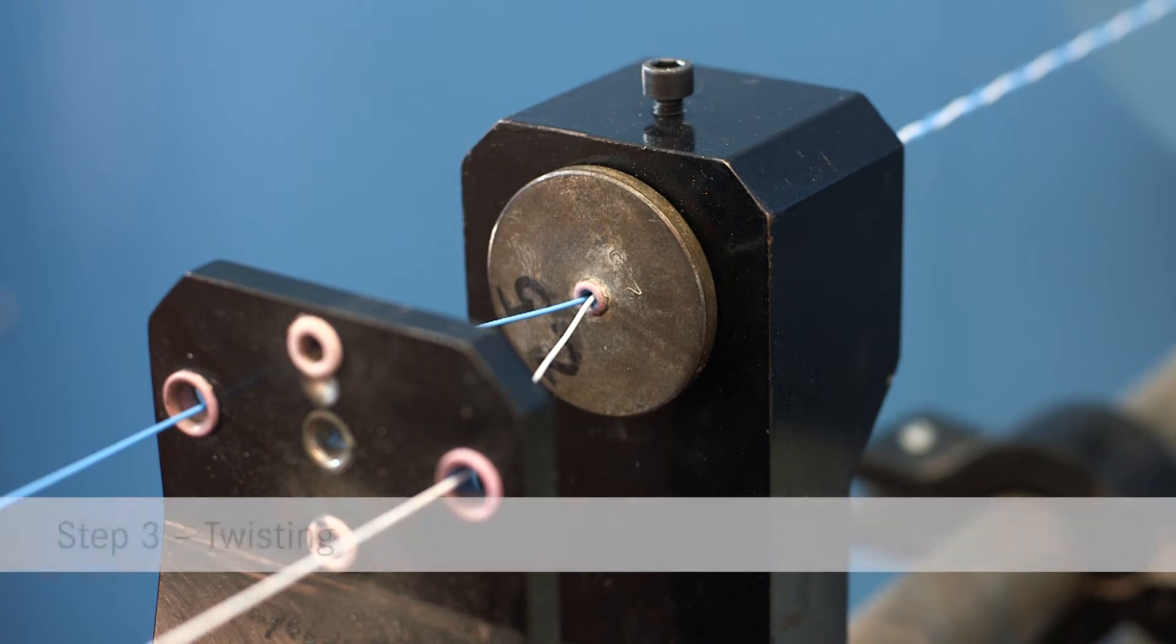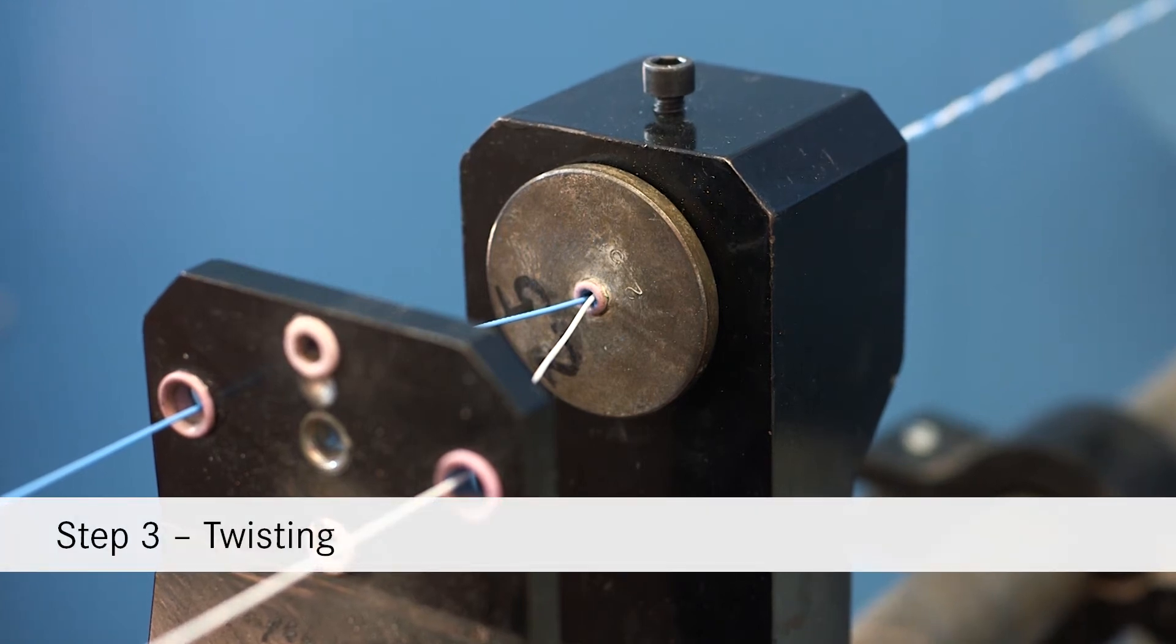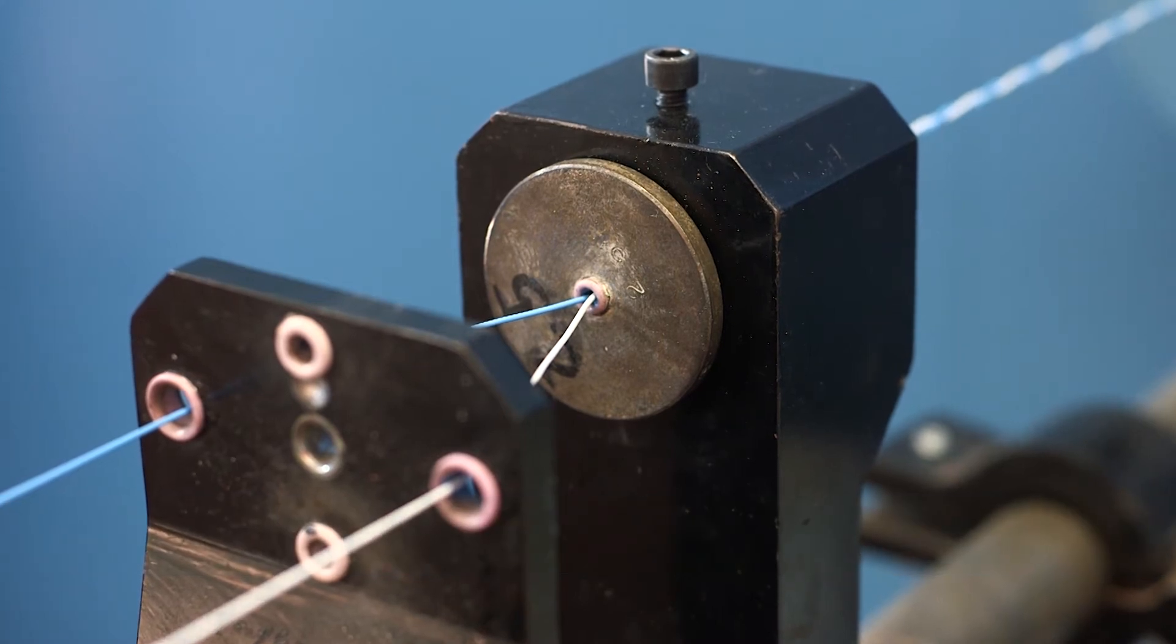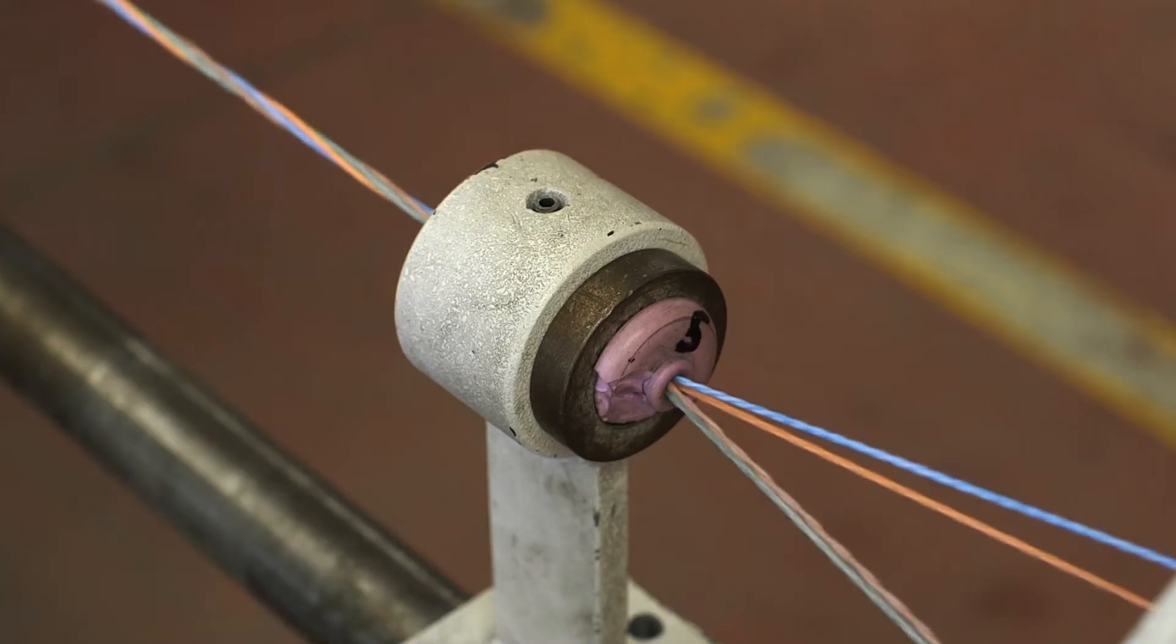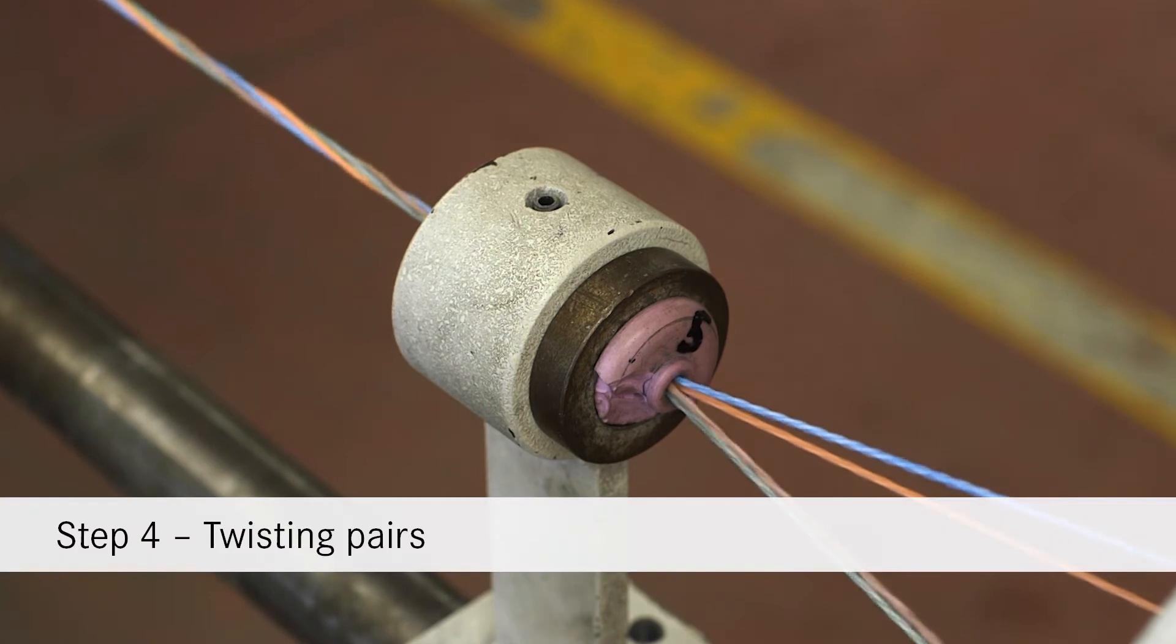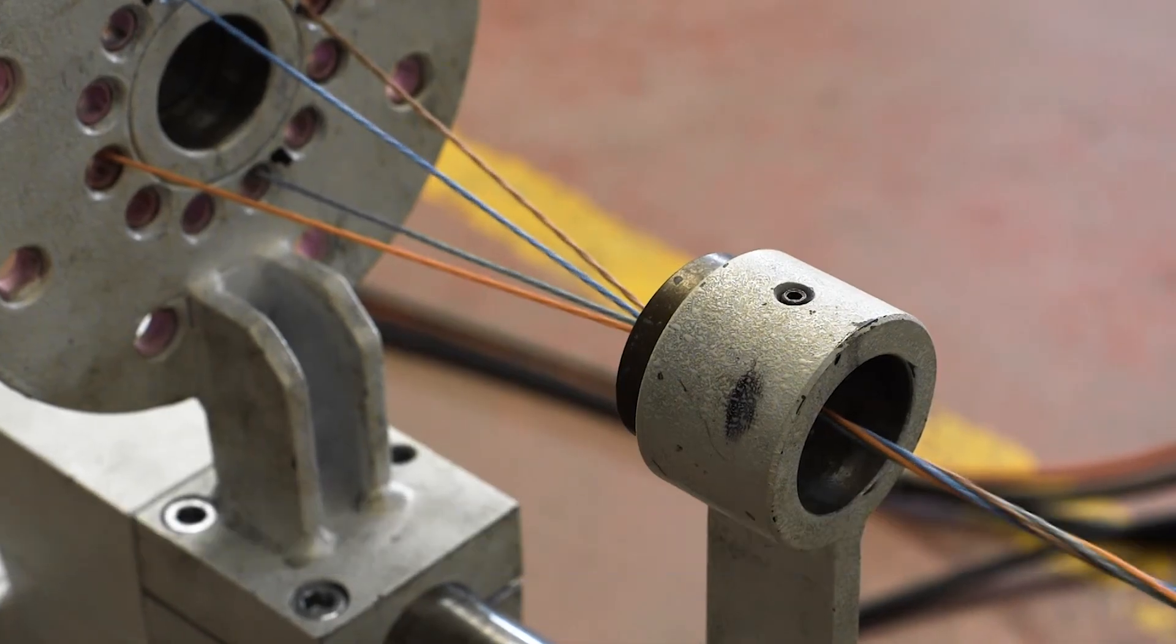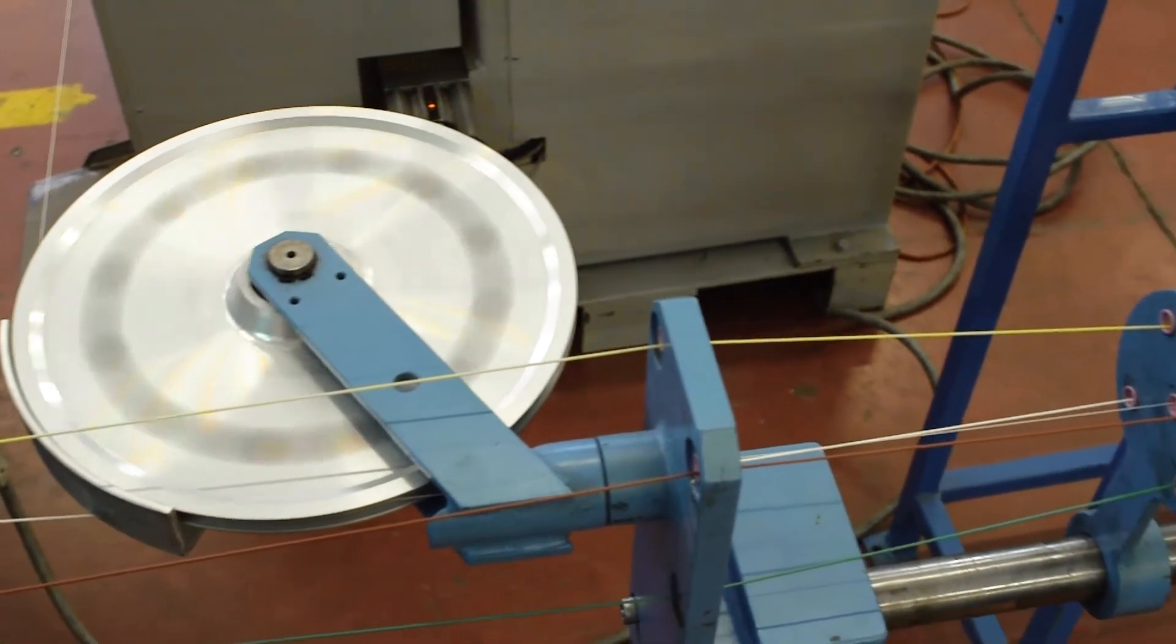The next step is twisting. In this step, the insulated cores are twisted together. Individually insulated cores are stranded as paired strands, which in turn are woven with one another. The star quad structure is ideal for producing particularly compact cables.